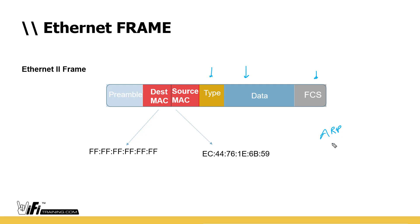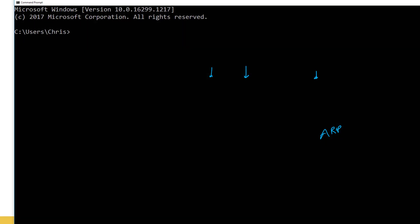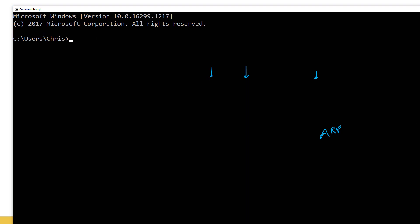ARP is the Address Resolution Protocol. If you want to see all the stations your computer knows about on your LAN, go back to Command Prompt — Start, Windows, type cmd, hit Enter — and use the command 'arp -a'.